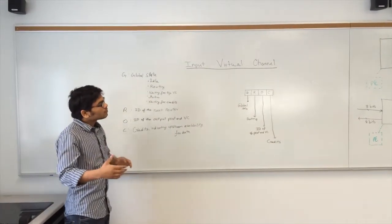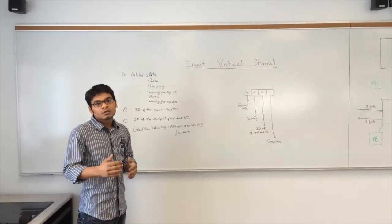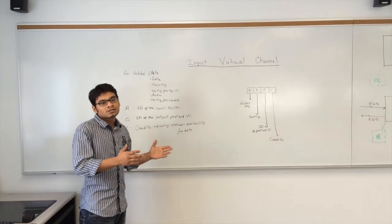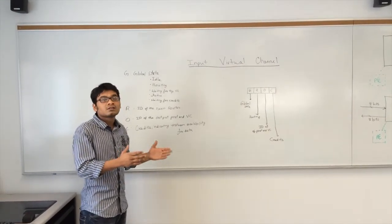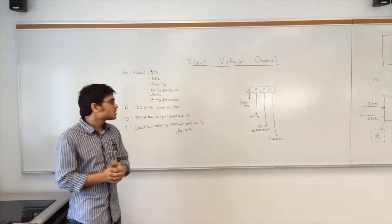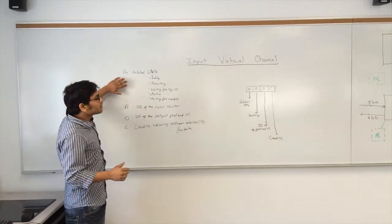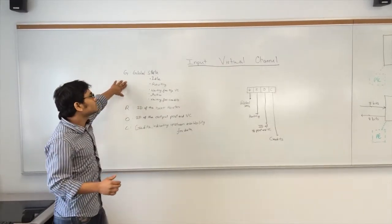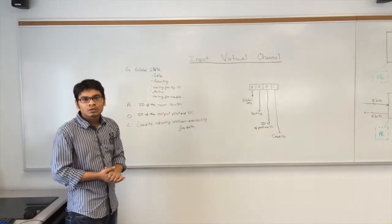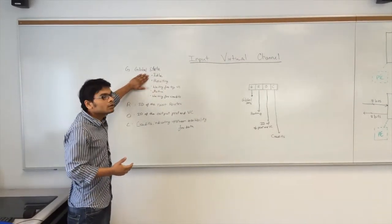The values of the states of the different fields change according to the process as the flit is being forwarded, as the transmission takes place. First, the G field: when there is no packet arriving at the input unit, the state of the G field is in idle.